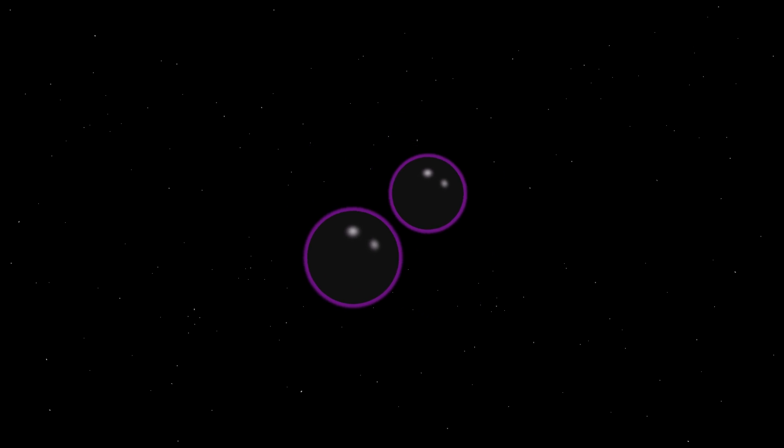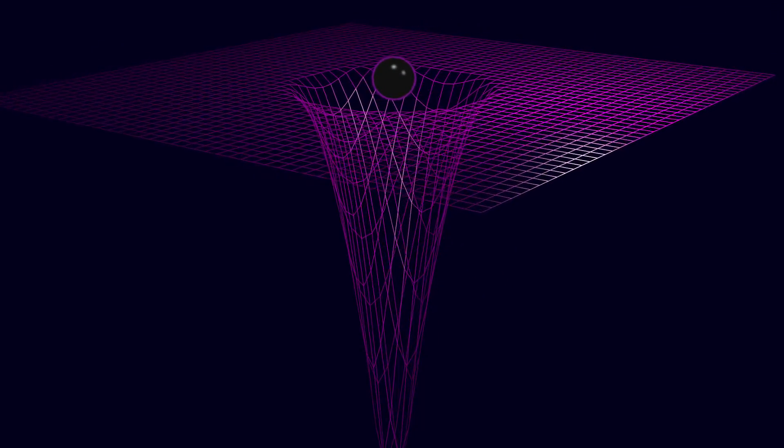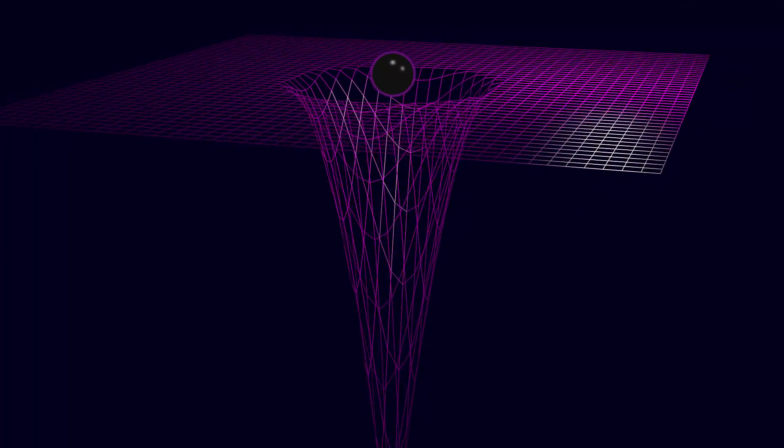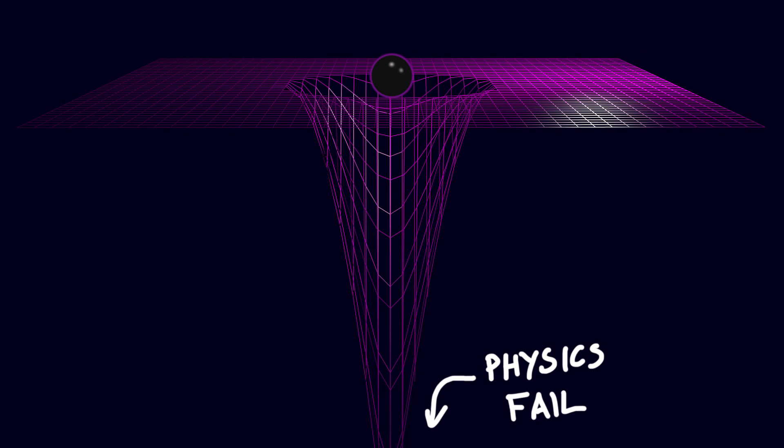Black holes are incredible objects. The pull of their gravity, the amount they bend space-time, is so strong that no light can escape them. No one knows what exists in the center of a black hole as normal physics completely breaks down. What we do know is that they're infinitely dense.